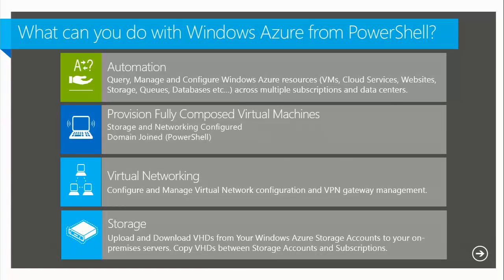Whenever you're provisioning workloads using infrastructure as a service with virtual machines, one significant difference between using PowerShell and the portal is you can provision fully composed virtual machines. In the portal, if you want to add five disks, those are five separate operations. From PowerShell, you can create your virtual machine with all the disks and all the networking configured all at once — very useful for big deployments with multiple servers.